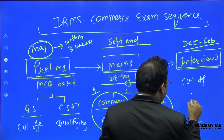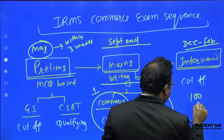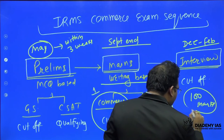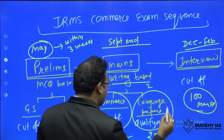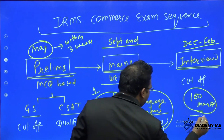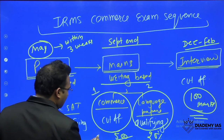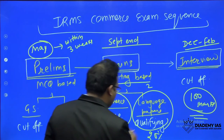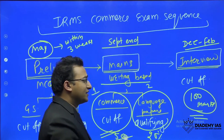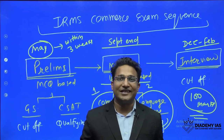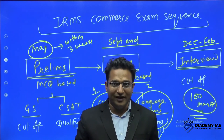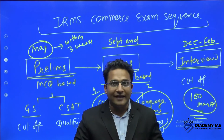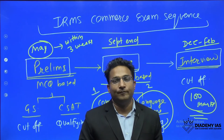The interview happens somewhere between December to February in the subsequent months. The interview carries a total of 100 marks. The marks from the interview and the marks from the commerce optional are counted together — out of a total of 600 marks — and whoever gets the maximum marks will be getting the seat. This is the whole examination pattern.